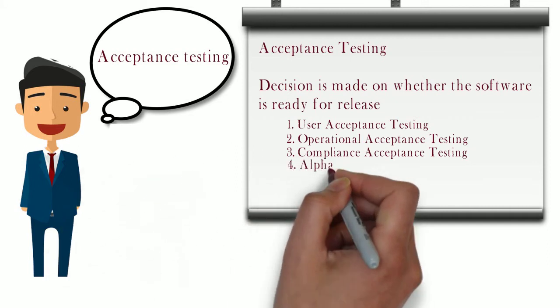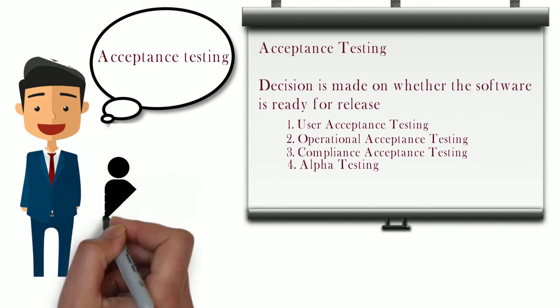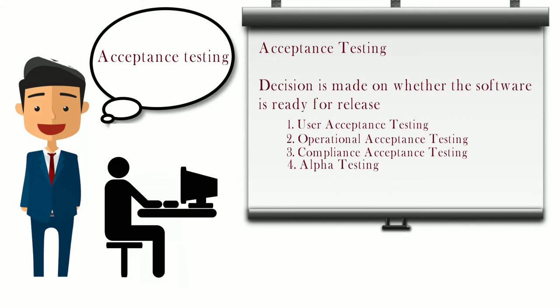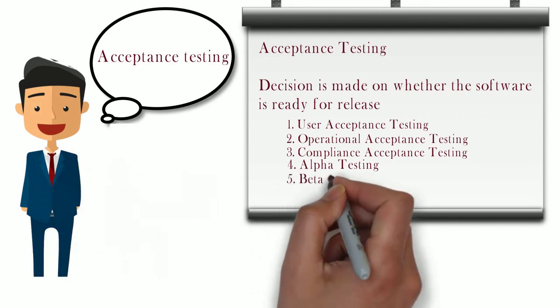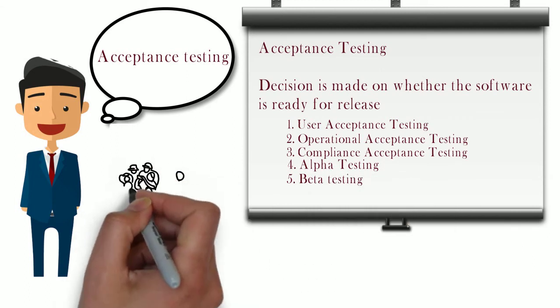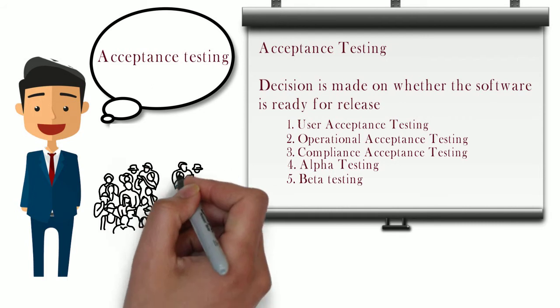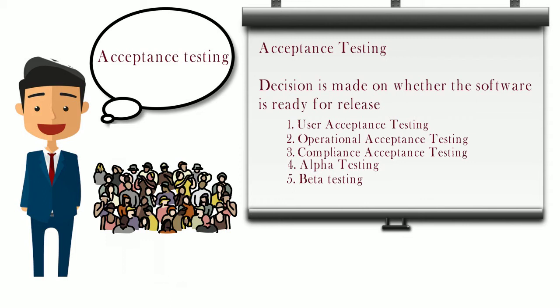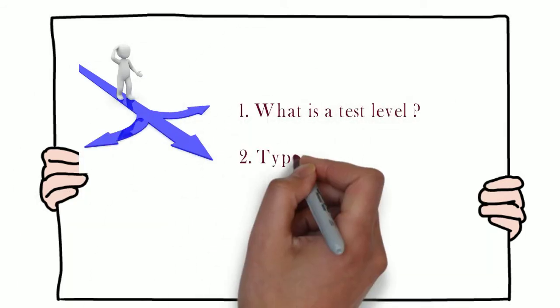The next type is alpha and beta testing, used when feedback is required from the market before releasing a product. Alpha testing is performed at the developer's site by potential users and members of the development team — they note problems and fix them. Beta testing is performed by real users in real-world working conditions — they send records of incidents to the development organization, which then repairs the issues.